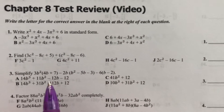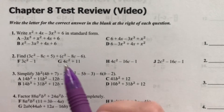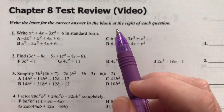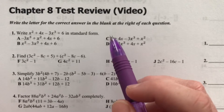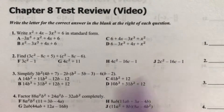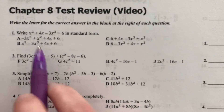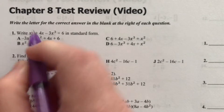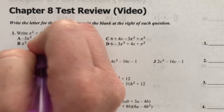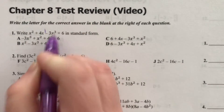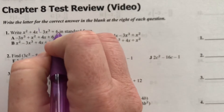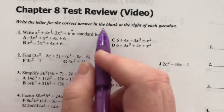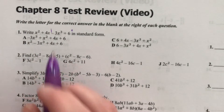We have to write this so that the terms go in order from the biggest degree down to the smallest degree. So the largest degree here — we've got a 2, a 1, a 3, and this 6 doesn't have a variable, so it's got a degree of 0. So we want to write it in order, biggest to smallest.